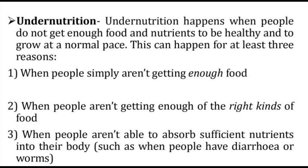One of the most severe at-risk populations are children under 5. Malnutrition during the early stages of development can have negative and severe effects on growth and intellectual development. This effect on a child's intellectual quotient makes it harder for them later in life to achieve their true potential abilities. Breaking the cycle of malnutrition during early childhood development can break the cycle of intergenerational poverty among poor communities.